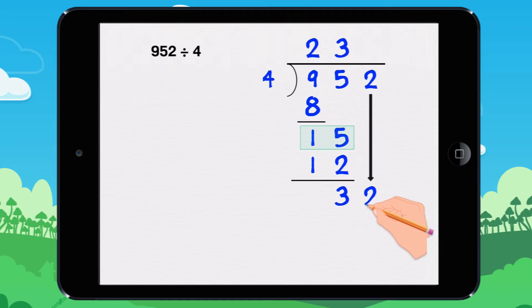Bring down a 2. How many times does 4 go into 32? It goes into it 8 times, because 8 times 4 equals 32.